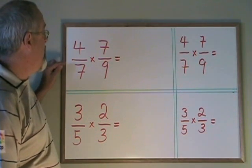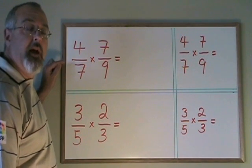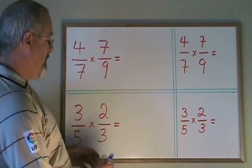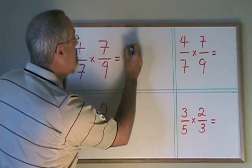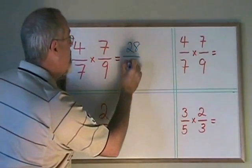Let's look at this question 4 7ths times 7 9ths and try doing it the usual way without canceling. 4 times 7 is 28 and 7 times 9 is 63.